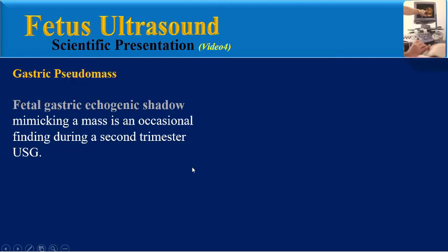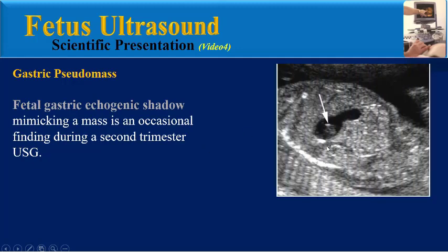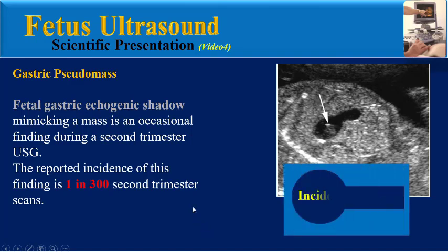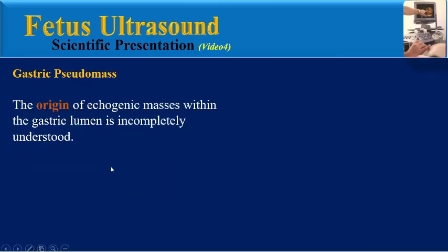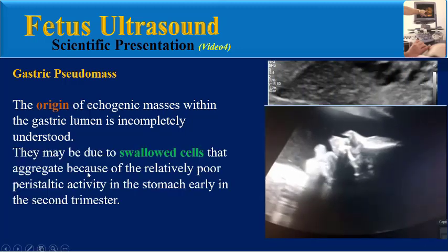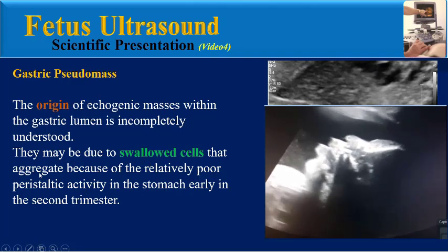Fetal gastric echogenic shadow mimicking a mass is an occasional finding during second trimester ultrasound. The reported incidence of this finding is about one in three hundred second trimester scans. The origin of echogenic masses within the gastric lumen is incompletely understood. They may be due to swallowed cells that aggregate because of the relatively poor peristaltic activity in the stomach early in the second trimester.